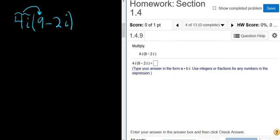So 4i times 9, well 4 times 9 is 36, and the i kind of just hangs out, so 36i. And then 4i times negative 2i is negative 8, because 4 times 2 is 8, and then i times i is i squared.